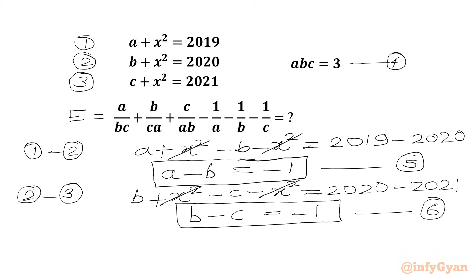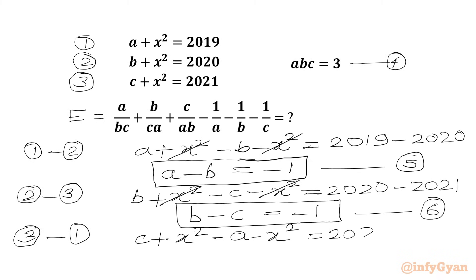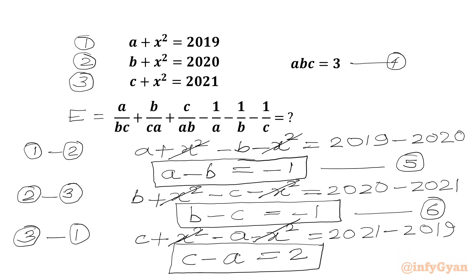So: a minus b is negative 1, b minus c is also negative 1. Now we take the first equation away from the third one: c plus x² minus a minus x² equals 2021 minus 2019. Canceling x² terms, c minus a equals 2. This is equation number 7.